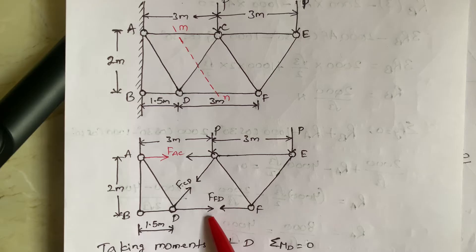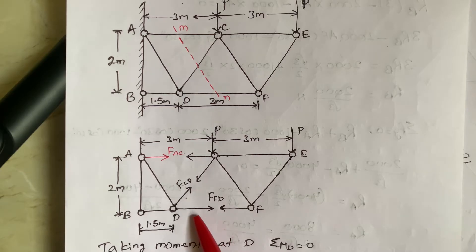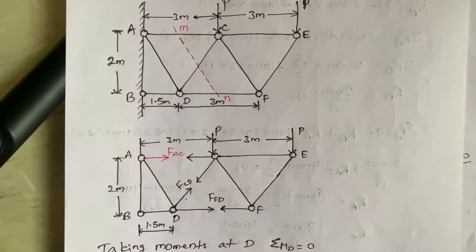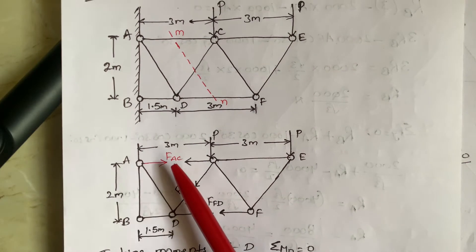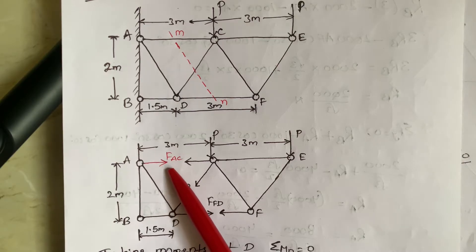So these are the section passing MN members. So in this case, we need not to determine the support reactions because the force in the member AC can be determined using method of sections.